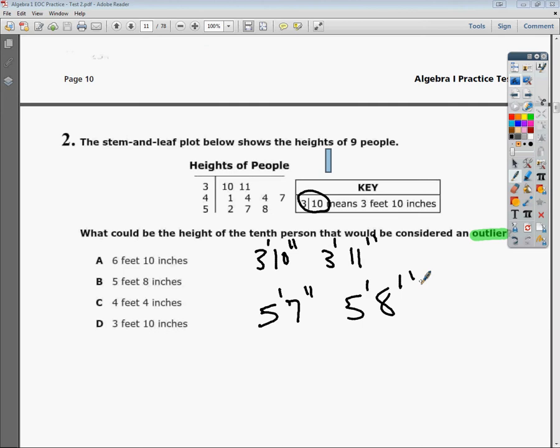So anything that falls into that general range would be considered normal and not an outlier. So 3 foot 10, probably not an outlier, even though it is the bottom term. It's not way below or way above. 4 feet 4 inches is right in the middle of these things, so that's fine.